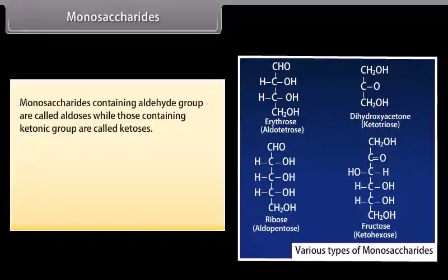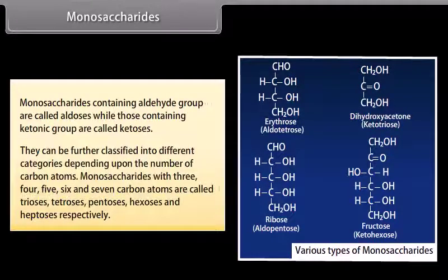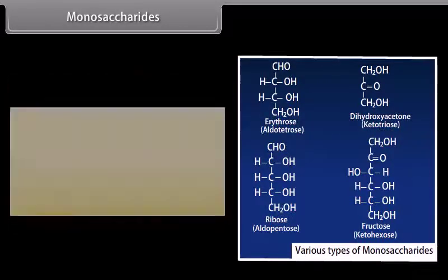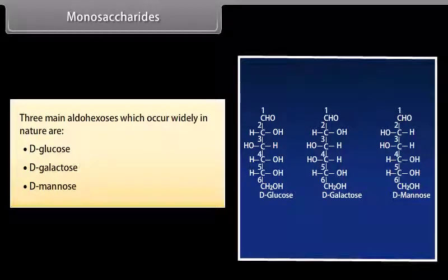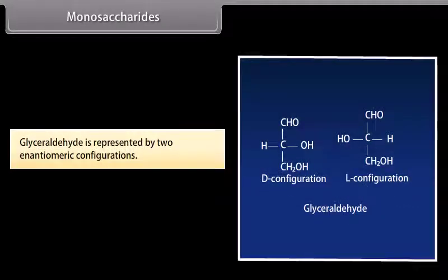Monosaccharides containing aldehyde group are called aldoses, while those containing ketonic group are called ketoses. They can be further classified depending upon the number of carbon atoms: monosaccharides with three, four, five, six and seven carbon atoms are called trioses, tetroses, pentoses, hexoses and heptoses respectively. Three main aldohexoses which occur widely in nature are D-glucose, D-galactose and D-mannose. The letter D represents the configuration as derived from glyceraldehyde, which is represented by two enantiomeric configurations.